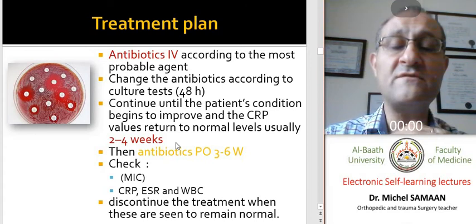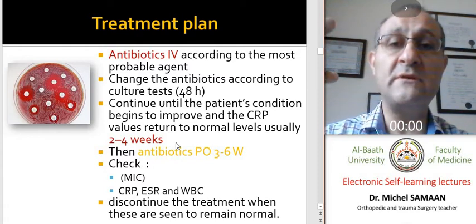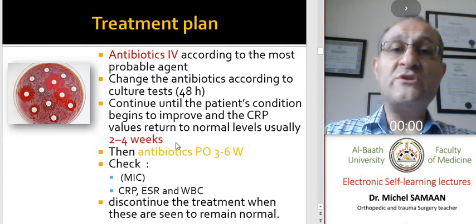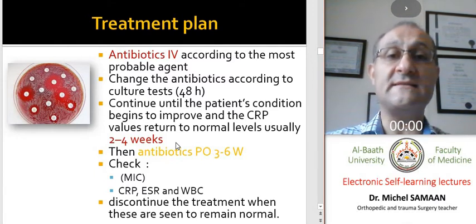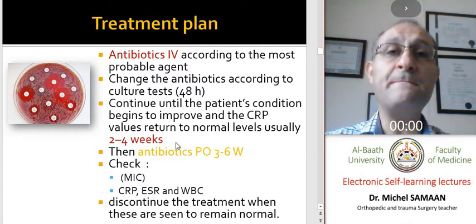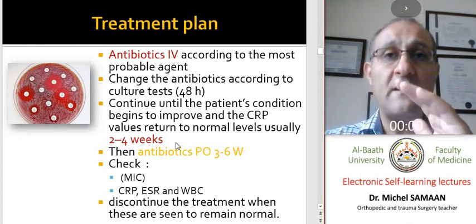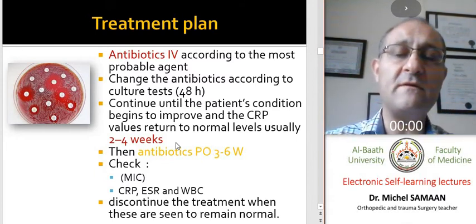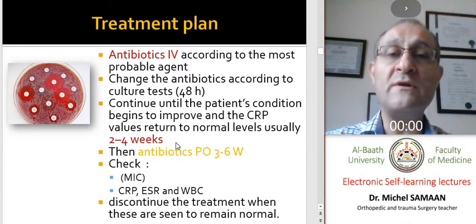The antibiotic treatment plan begins with intravenous antibiotics according to the most probable organism. After 24 hours, we change the antibiotic therapy according to the sensitivity tests. We continue intravenously for two to four weeks until the blood laboratory findings become normal and the general condition of the patient improves.